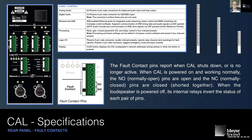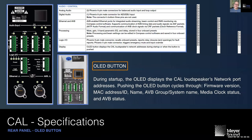The fault contact shows whether the loudspeaker is in normal operation or not working. These are relays — very valuable in a large commercial center where you can't send a person every day to check each CAL. Having this status information fed back to a control room is super valuable. Pushing the OLED button during startup displays the CAL's network port, and during normal operation it shows firmware version, MAC address, the loudspeaker's name, and other important deployment information — all also found in the CAL user guide.